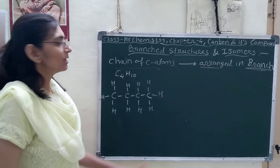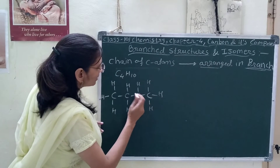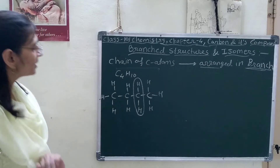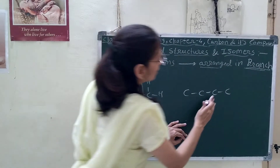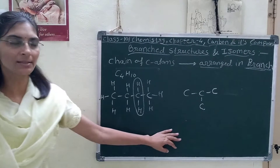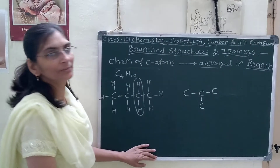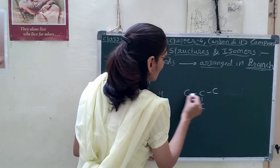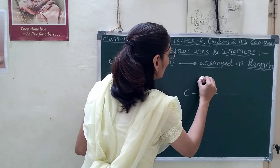So this is the open chain structure. Now we will see how the branch structure will form. Instead of this chain, one carbon atom and two hydrogen atoms will come out from the chain. This carbon atom is formed in the branch structure. The valency is 4 — 1 and 1 and 1, so 3 valencies are fulfilled here by this carbon atom. Only 1 is remaining, which will be fulfilled by hydrogen.